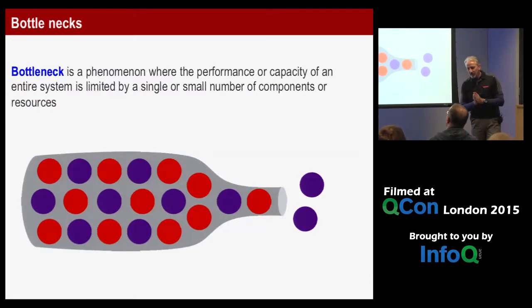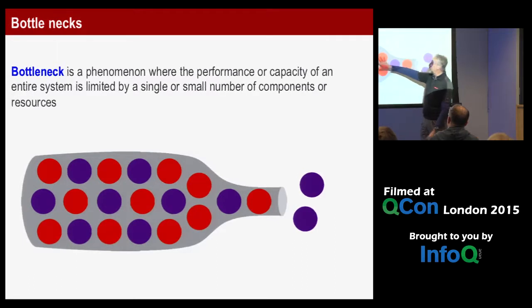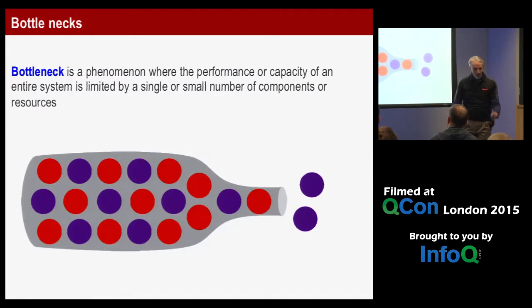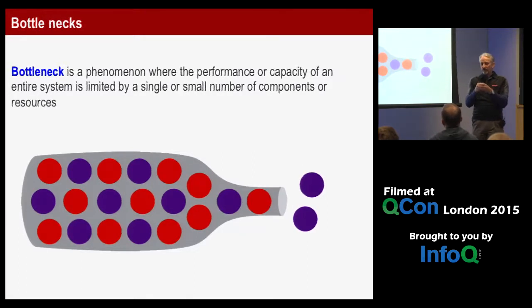A bottleneck is a choke point — a throttle where things close off and blockages occur. Think of thermodynamics: at the constriction, pressure and temperature increase; past it, everything expands and cools. In computing, bottlenecks are caused by many things — some by you.